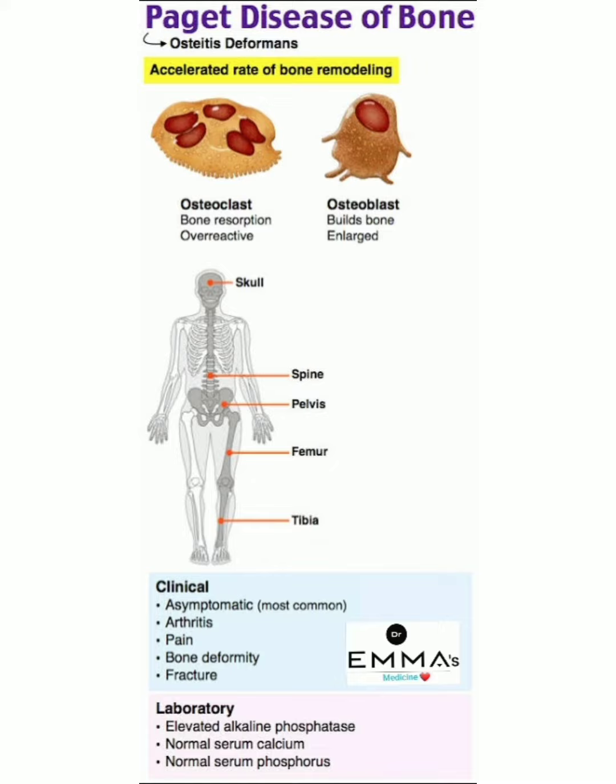Looking at the image, we can see osteoclast bone resorption and osteoblast bone building — both enlarged. So there is a change in Paget's disease involving osteoclasts and osteoblasts. In osteoclasts, bone resorption is overactive, and in osteoblasts, bone building is also enlarged.